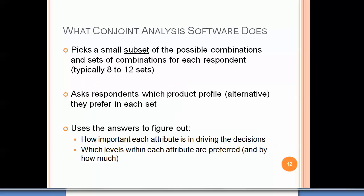Conjoint analysis software carefully picks a small subset of the possible combinations to display to people, in sets shown to each respondent. It will typically choose about 8 to 12 sets for each respondent to evaluate, and they can typically complete it in about 2 to 10 minutes. We then ask respondents which product profile or alternative they prefer in each set, and use those repeated answers across individuals and different combinations of levels to figure out how important each attribute is in driving their decisions and which levels within each attribute are preferred and by how much.